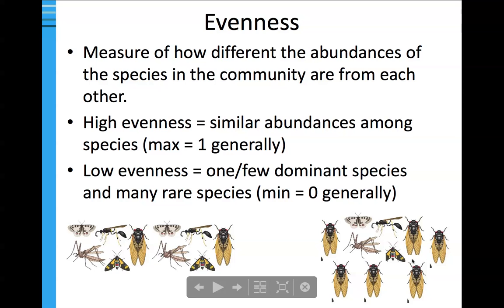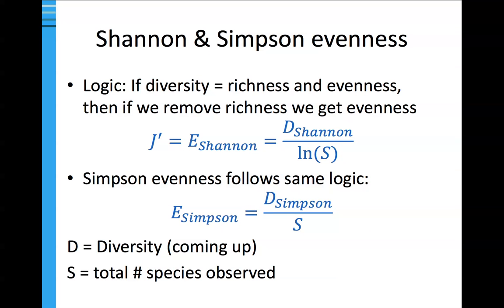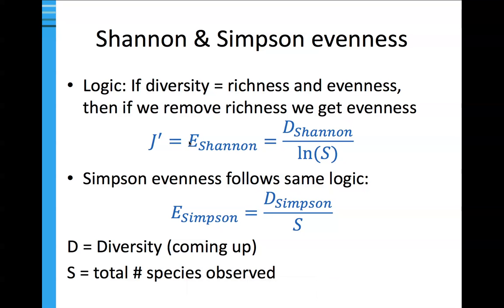There are a couple of measures of alpha diversity that are quite common in ecology: the Shannon and Simpson diversity indices. If diversity equals richness and evenness, then if we remove richness we get evenness, and the same logic follows for Simpson's. We can use these to calculate diversity indices. So what exactly is diversity? We'll cover Shannon and Simpson's in the context of evenness.